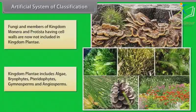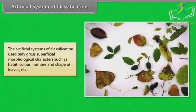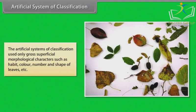This kingdom has organisms including gymnosperms and angiosperms. The artificial systems of classification used only gross superficial morphological characters such as habit, color, number, and shape of leaves, etc.